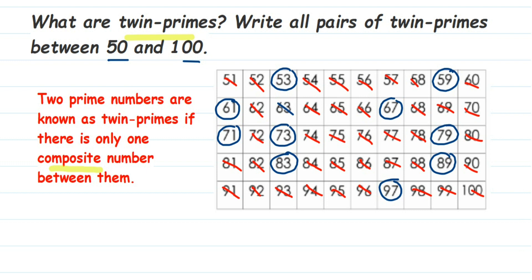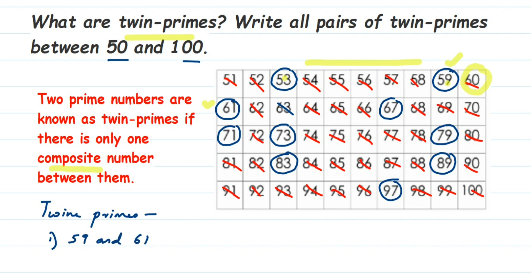Now I have marked all the prime numbers between 50 and 100. Let's find which ones are twin primes — there should be only one composite number between them. Between 53 and 59 there are many composite numbers, so they are not twin primes. But between 59 and 61, there is exactly one composite number: 60. So 59 and 61 are twin primes.